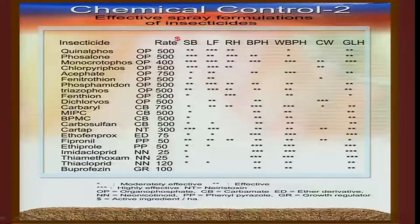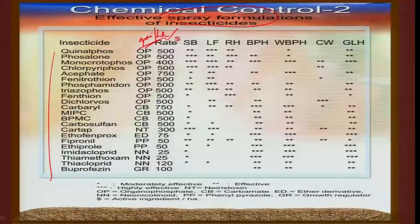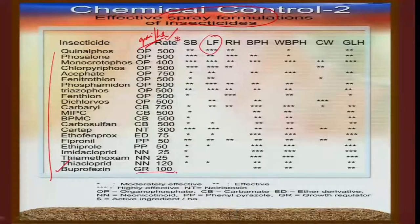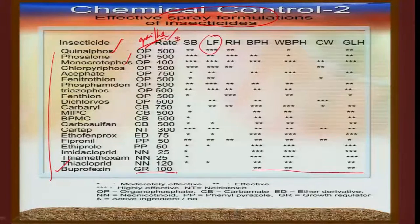In addition to granular formulations, spray formulations are also recommended in the paddy ecosystem, with fixed dosage rates. For example, quinolphos and organophosphorus compounds at 500 g ai per hectare are highly effective for stem borer and leaf folder. A safer molecule, buprofezin — a growth regulator — recommended at 100 g ai per hectare is moderately effective for sucking pests. Of late, quinolphos and monocrotophos usage has resulted in resurgence of sucking pests, so it is better to avoid these two molecules and use other sprayable formulations in the IPM package.